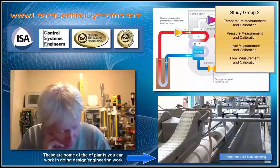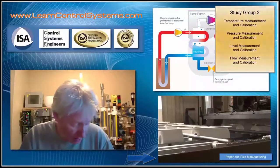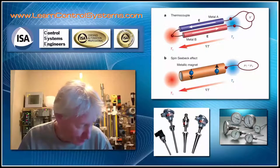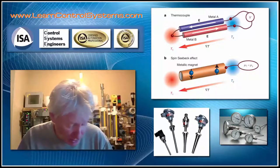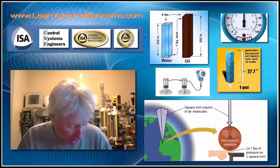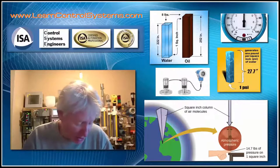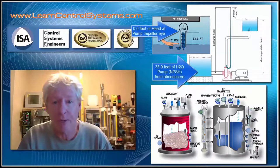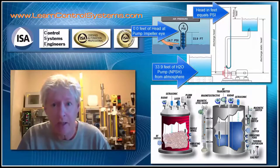What we just talked about is study group one. Study group two covers fundamental measurements: temperature measurement and calibration, how temperature measurements are made, how we utilize them, and how we send these signals. We'll look at pressure measurement — what pressure is, different types of pressure, and applications. We'll also look at level measurements, which are all based on pressure.